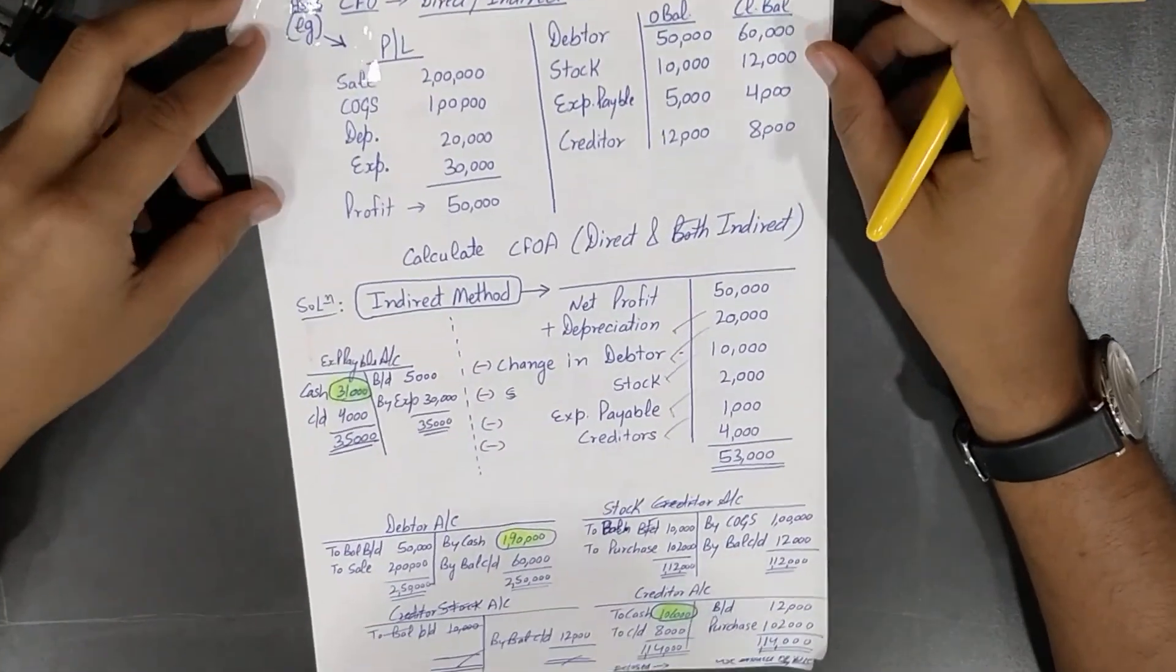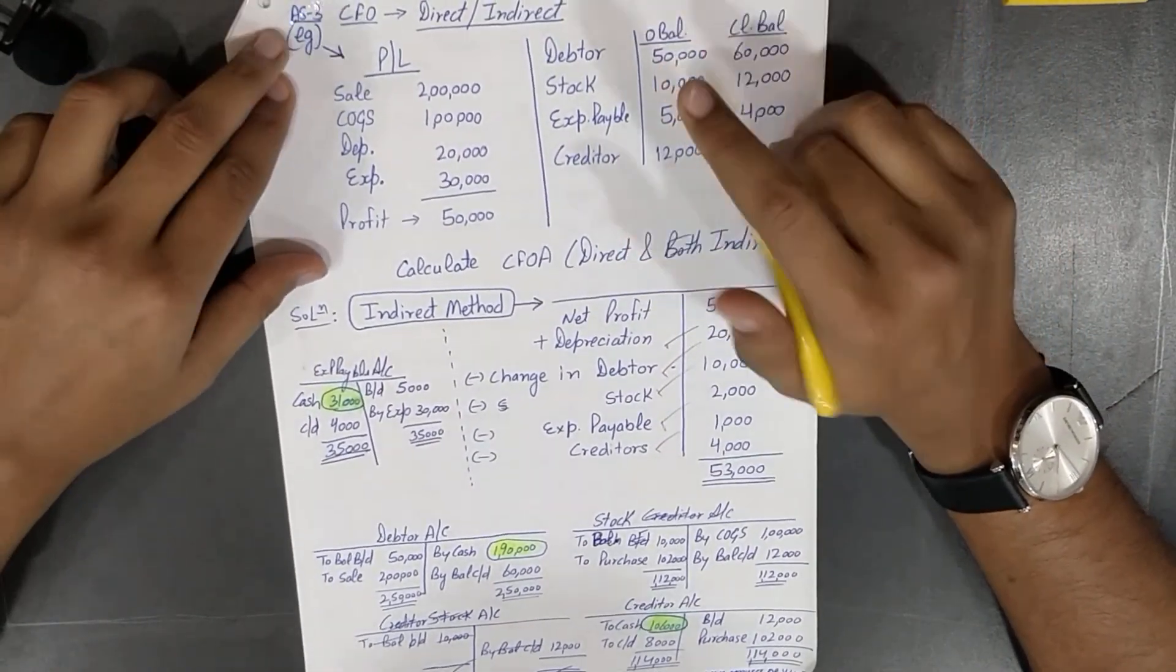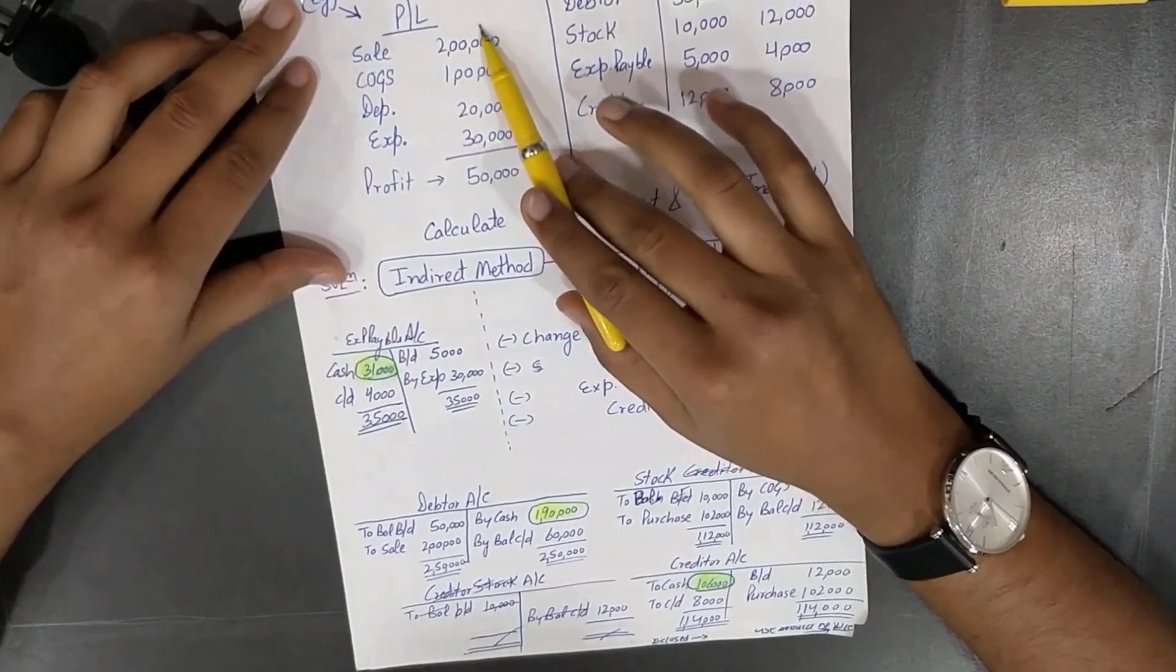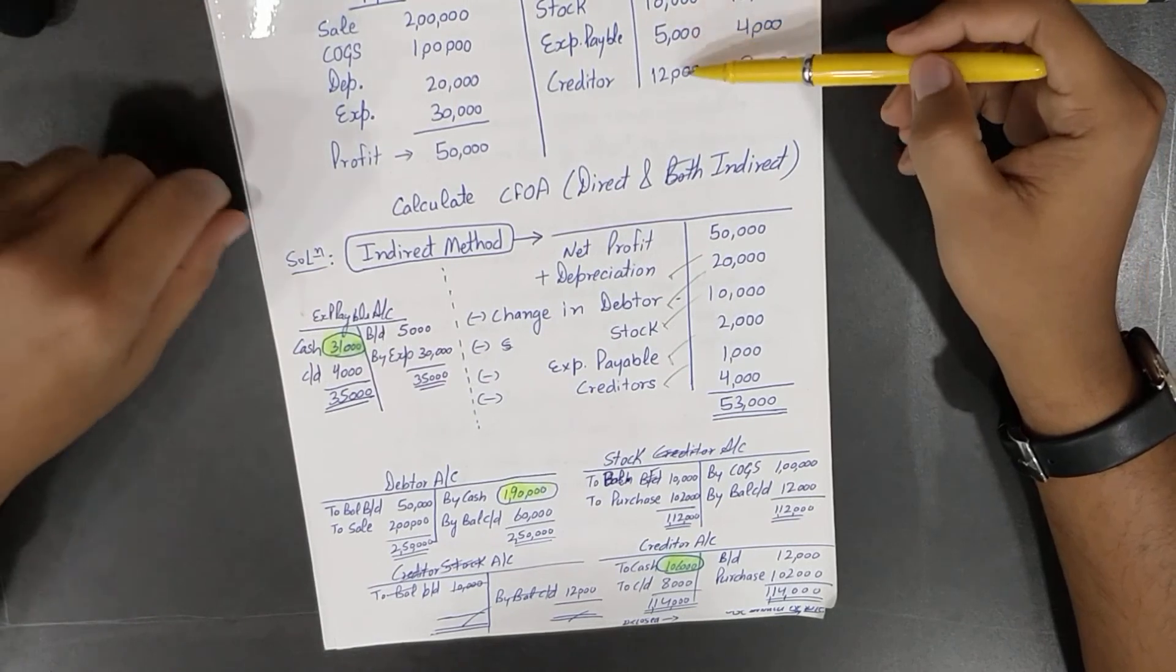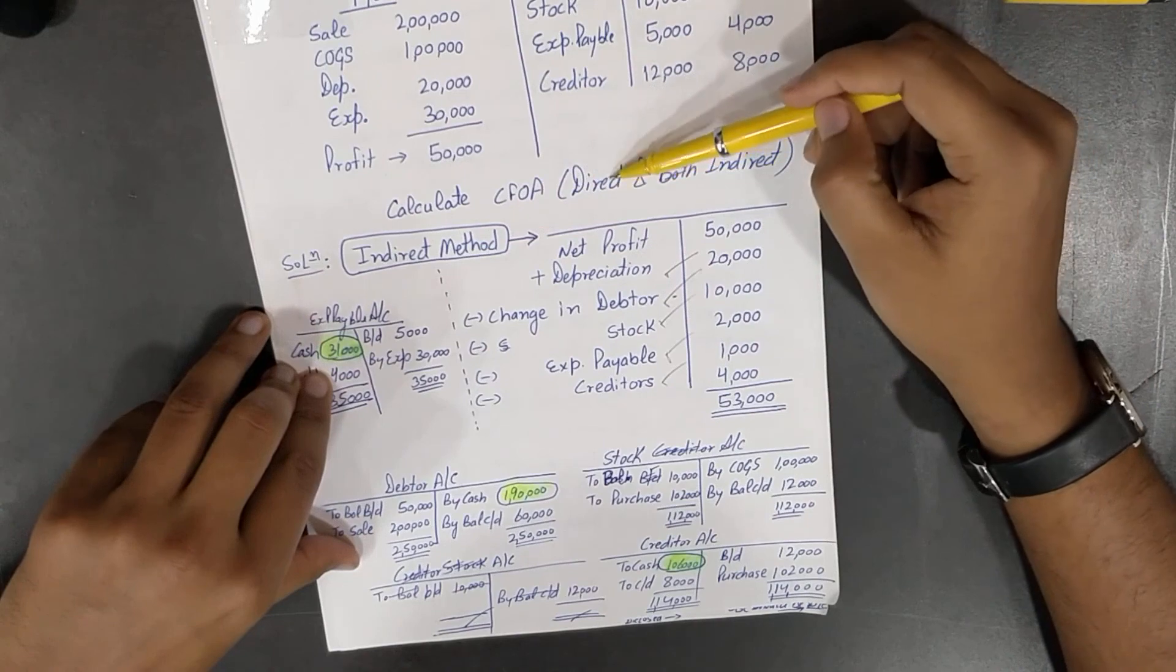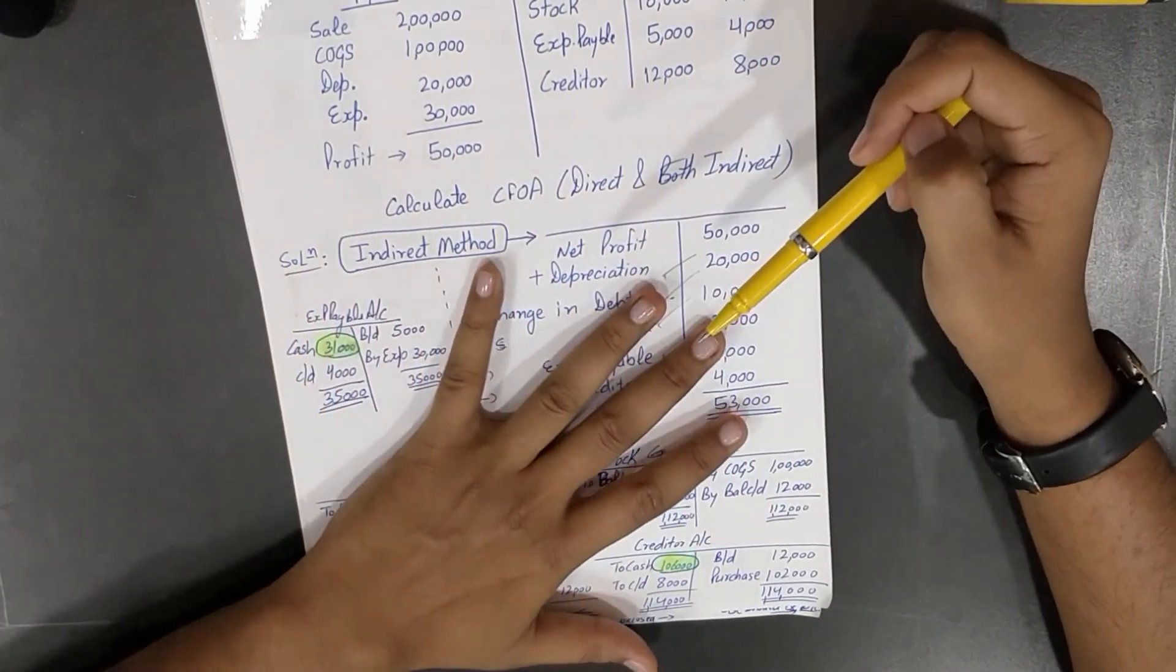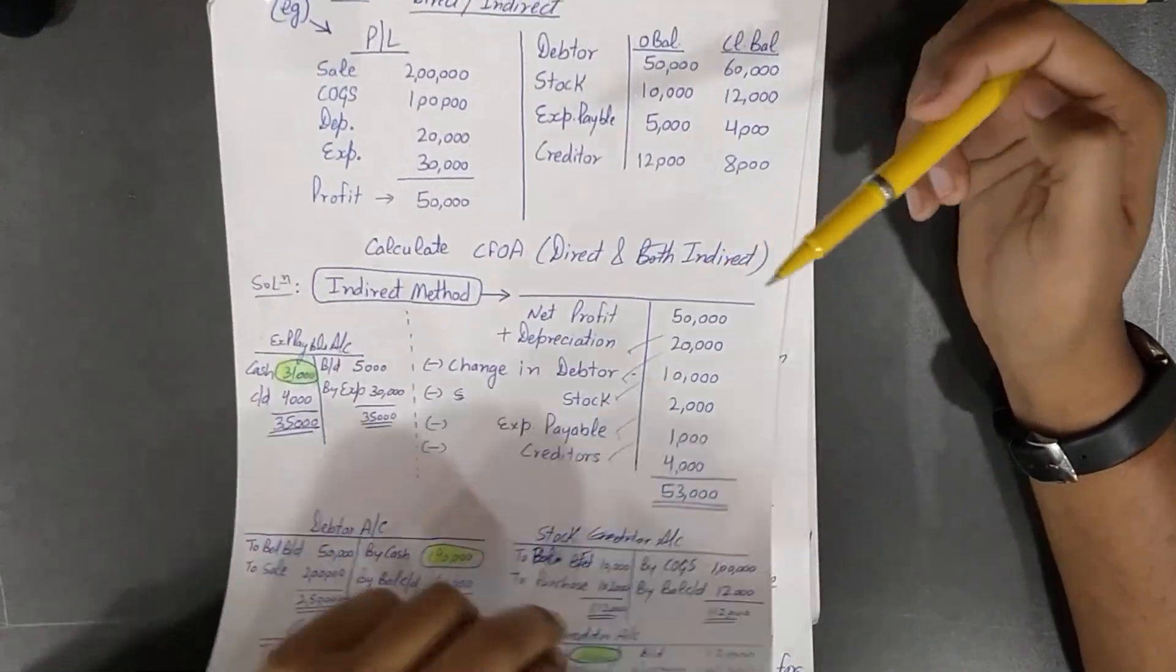Let's see an example of cash flow. I would request you to do this question by yourself. This is a question to calculate cash flow from operating activities from direct method and from indirect method. I have given you the profit and loss account, the debtor opening balance, stock, expense payable, creditor closing balances. Calculate cash flow from operating activities using direct method and indirect method. We have discussed everything right over there. You just check the question. This is pretty much very easy. So let's move further.